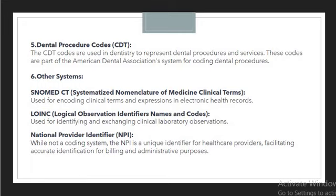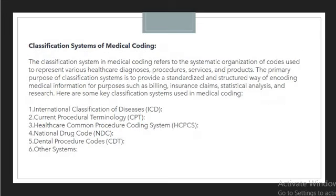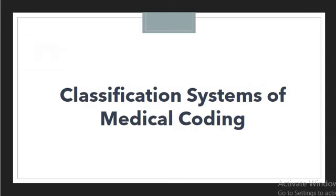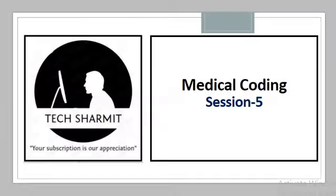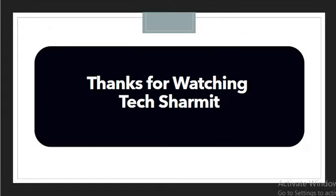There are also additional systems. SNOMED CT, or Systemized Nomenclature of Medical Clinical Terms, is used for encoding clinical terms and expressions in electronic health records. LOINC, or Logical Observation Identifier Names and Codes, is used for identifying and exchanging clinical laboratory observations. Finally, NPI or National Provider Identifier — while not a coding system — is a unique identifier for healthcare providers, facilitating accurate identification for billing and administrative purposes. These are the most commonly used medical coding classification systems. Thank you for watching.